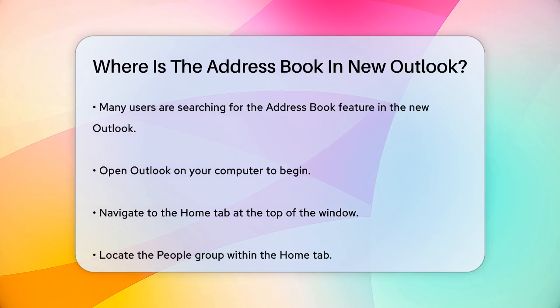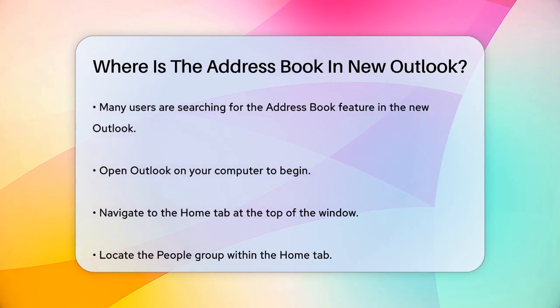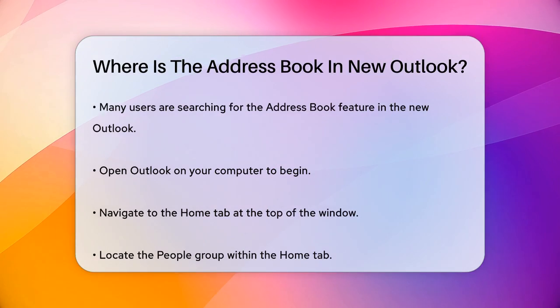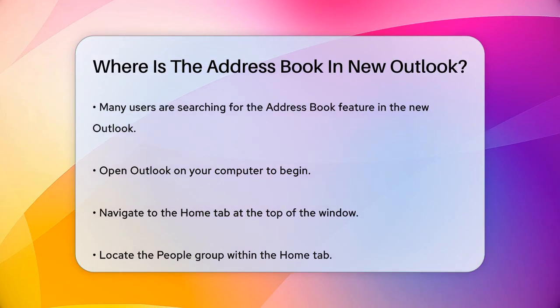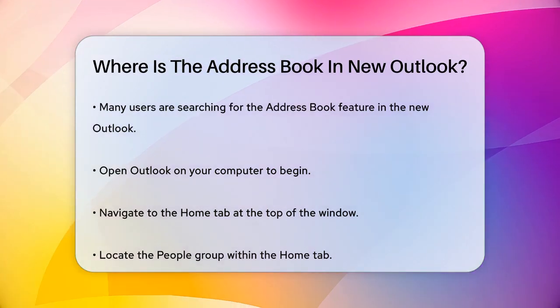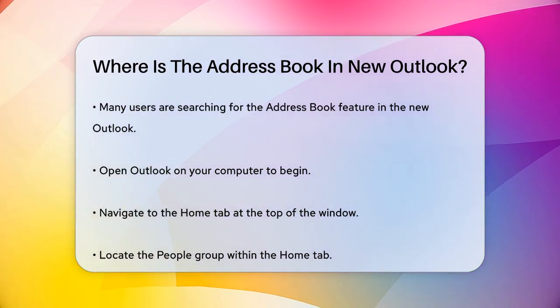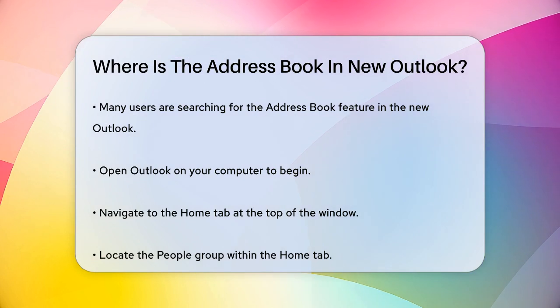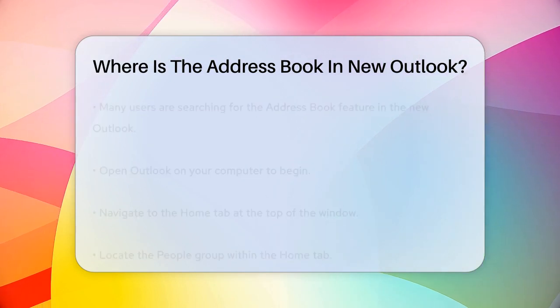To start, open Outlook on your computer. Once it's up and running, navigate to the Home tab at the top of the window. If you're already there, great. If not, just click on the Home tab to switch.